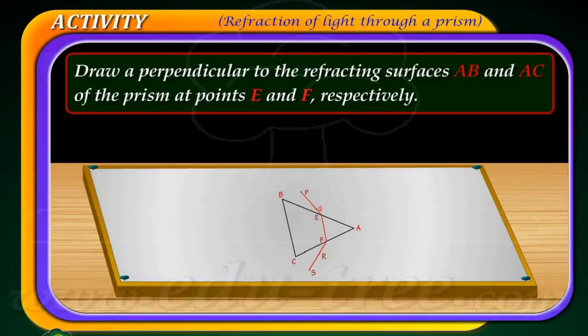Draw perpendiculars to the refracting surfaces A B and A C of the prism at points E and F respectively.